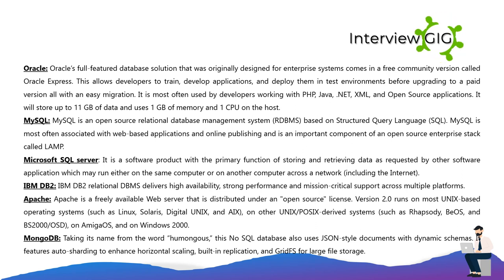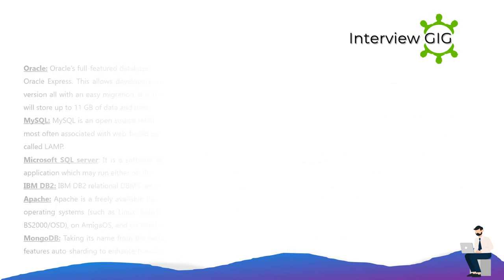Microsoft SQL Server stores and retrieves data as requested by other software applications, either on the same computer or across a network. IBM DB2 delivers high availability, strong performance, and mission-critical support across multiple platforms. Apache is a freely available open-source web server running on most Unix-based operating systems and Windows. MongoDB, named from the word 'humongous,' is a NoSQL database using JSON-style documents with dynamic schemas, featuring auto-sharding, built-in replication, and GridFS for large file storage.